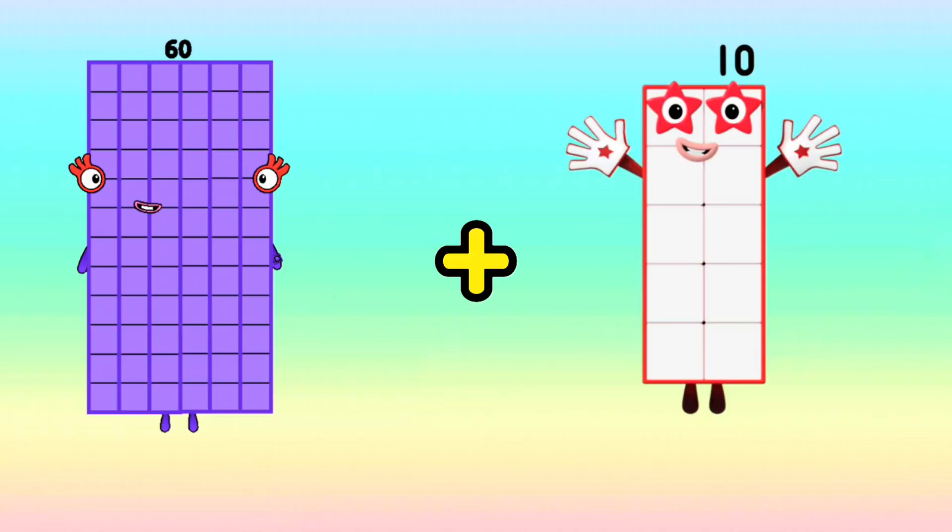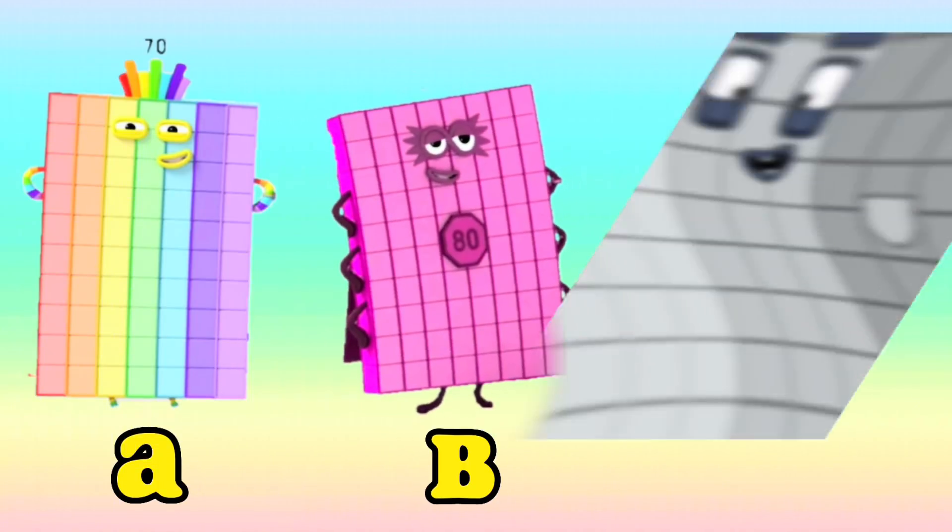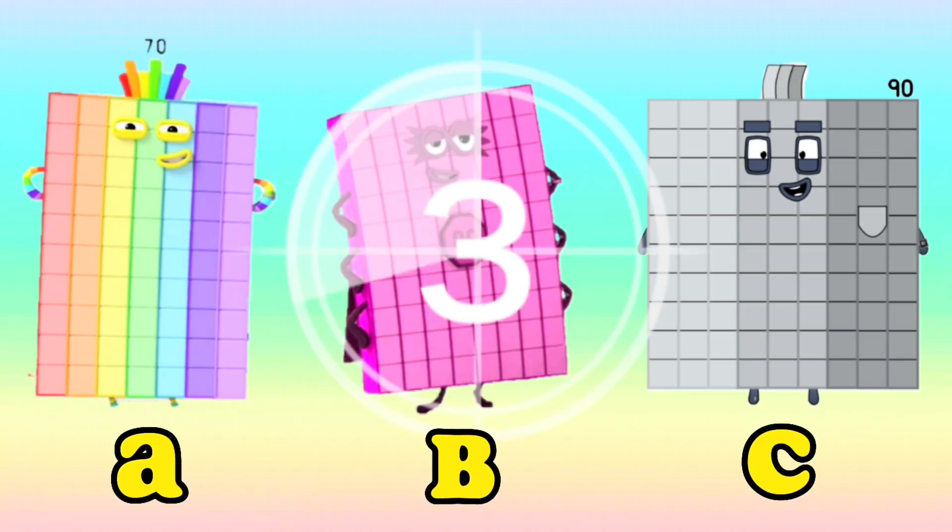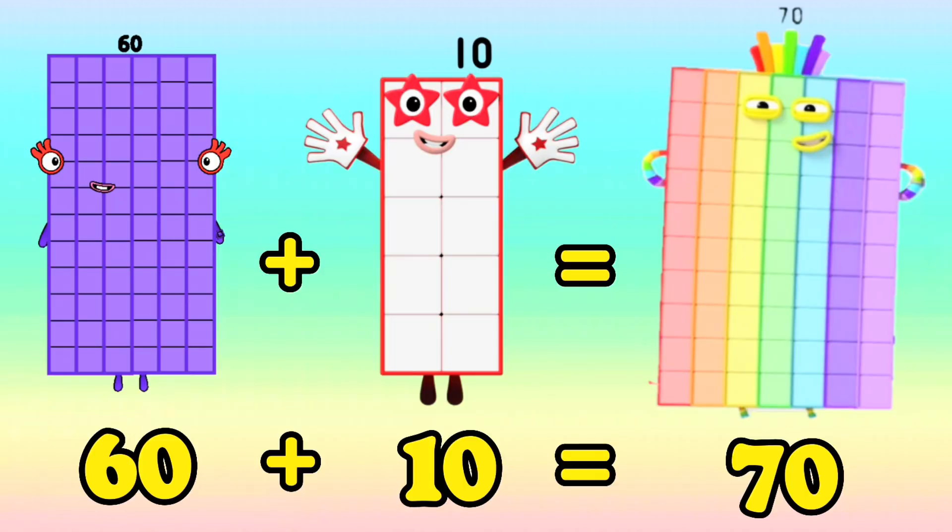Question number three: 60 plus 10 is equals to... Is it letter A: 70, letter B: 80, or letter C: 90? And the correct answer is letter A: 70. 60 plus 10 is equals to 70.